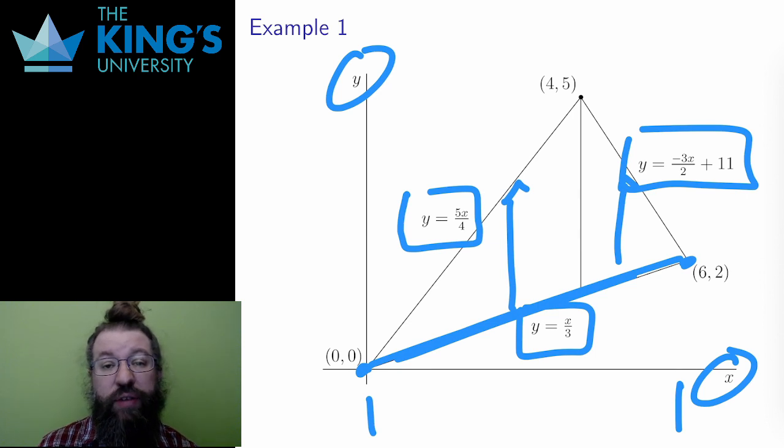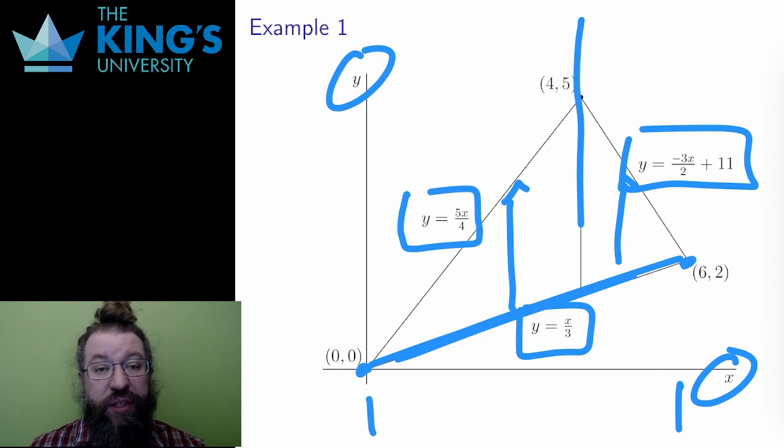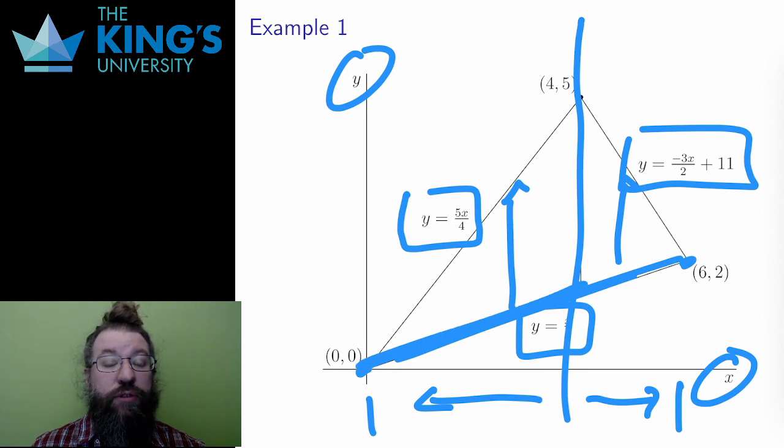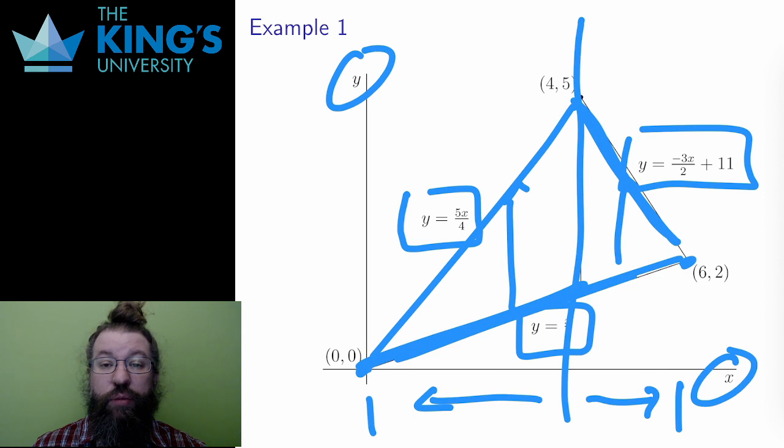If I made y the outside variable, this same problem would arise, so that switch doesn't actually help here at all. What I have to do here is do this in two pieces, one for x from 0 to 4, and one for x from 4 to 6. In the first, y = 5x/4 will be the upper bound, and for the second, y = -3x/2 + 11 will be the upper bound.